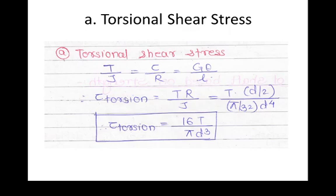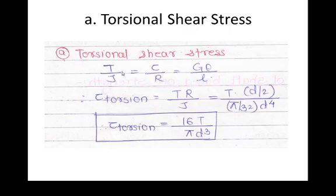For torsional shear stress, using T/J = τ/r: with R = D/2 and J = π/32 · D⁴, simplifying gives τ_torsion = 16T / πD³. For bending stress, using M/I = σ/y: with Y = D/2 and I = π/64 · D⁴, after simplification we get σ_B = 32M / πD³.